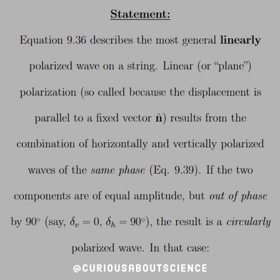If the two components are of equal amplitude but out of phase by 90 degrees, say delta V for vertical equals 0 and delta H for horizontal equals 90, the result is a circularly polarized wave. In that case: